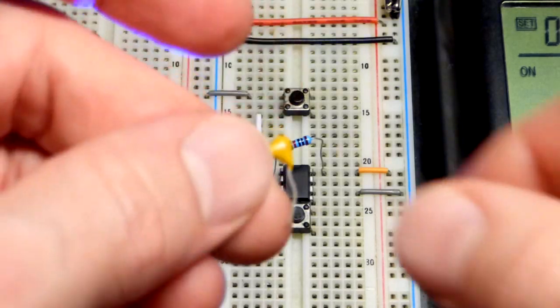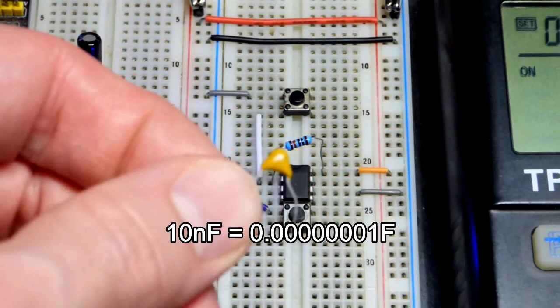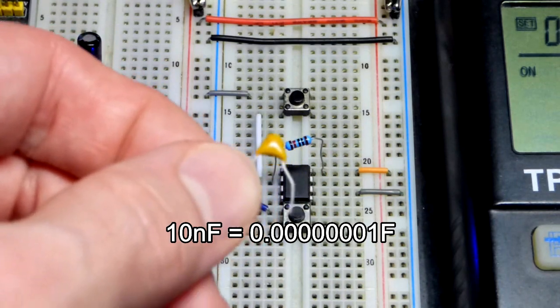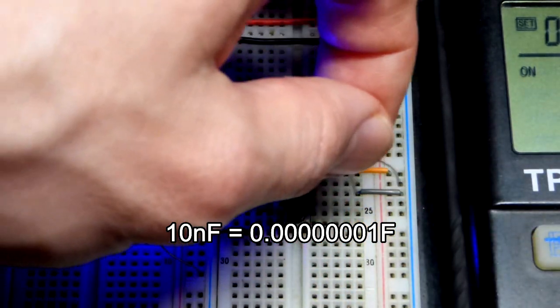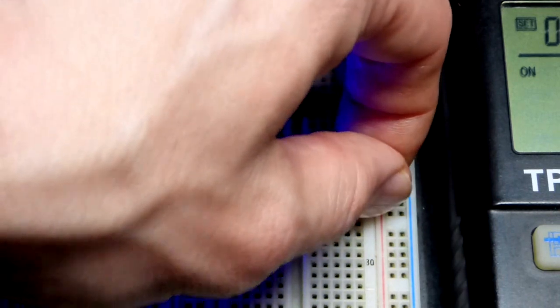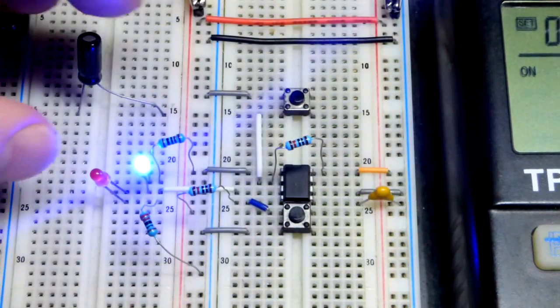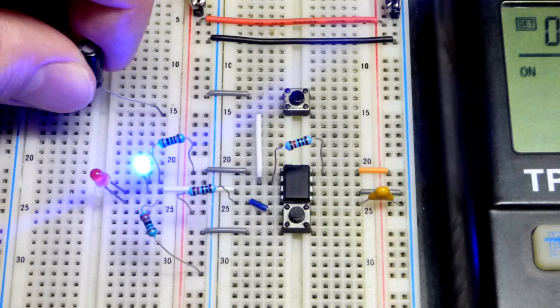So first off we're going to talk about the smaller capacitor. This is only 10 nanofarad, a very small value capacitor. That's the value you usually see at pin 5 for whatever reason. Most circuits it probably won't make any difference, but it's a good idea to still add it.